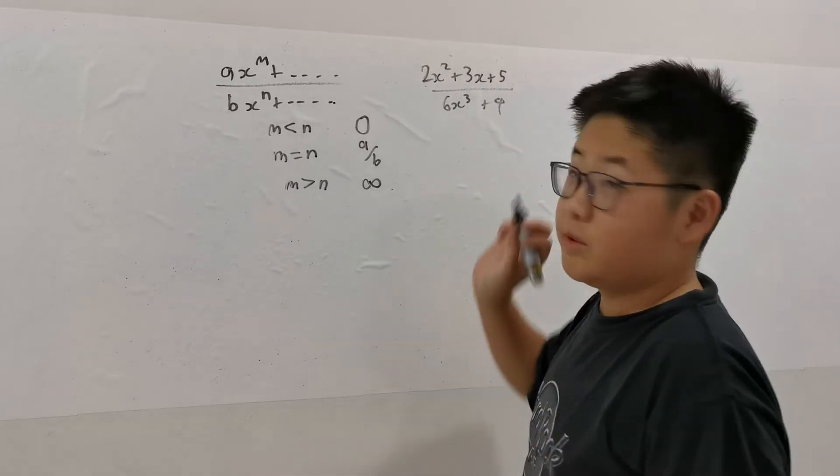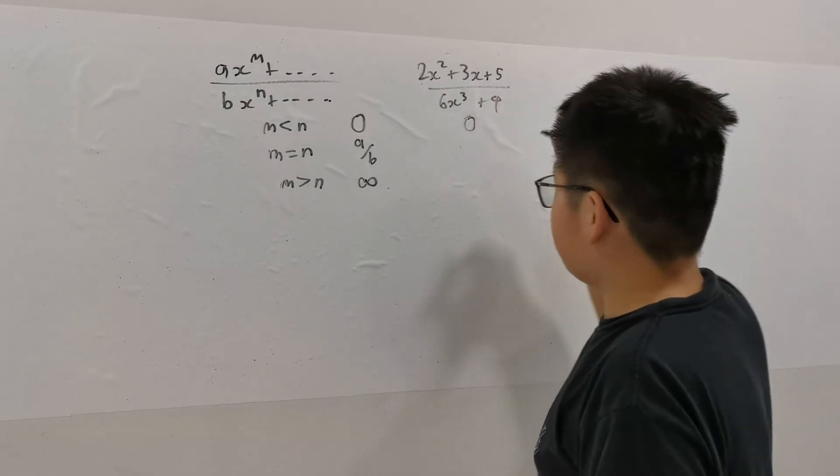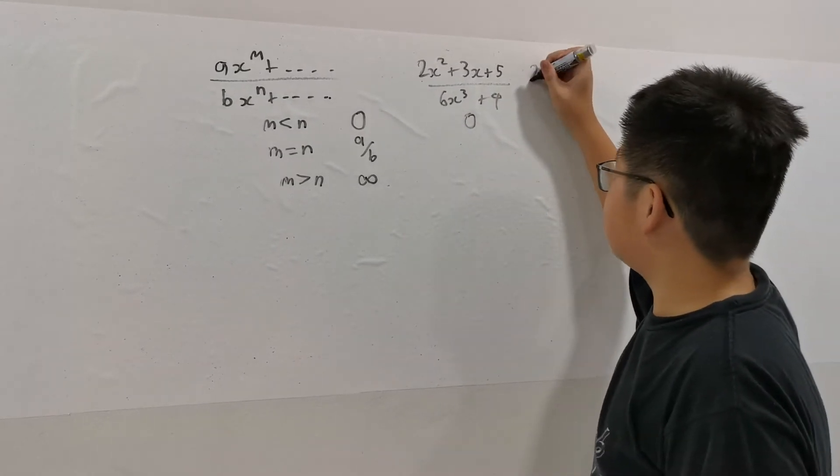So what's the limit? Well, we can tell you that this is 2, this is 3, so 0. The limit is 0. We can tell you that. Now how about...